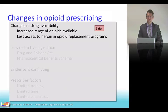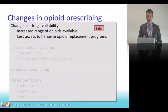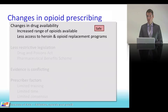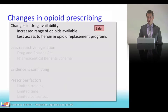Drug availability has changed significantly: more opioids are now available in different formulations — slow-release preparations, transdermal preparations, and a wide range of doses pushed by pharmaceutical companies claiming opioids are safe. Despite safety concerns, these drugs are being used for chronic non-malignant pain. At the same time, access to opioid replacement programs such as methadone and buprenorphine has decreased.